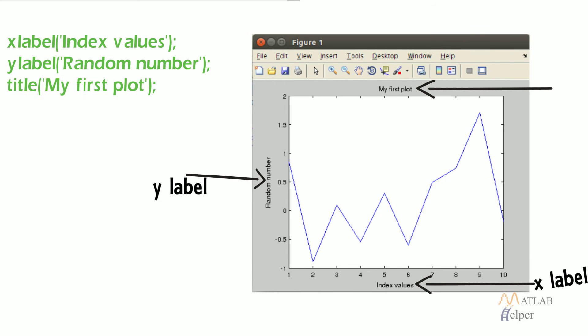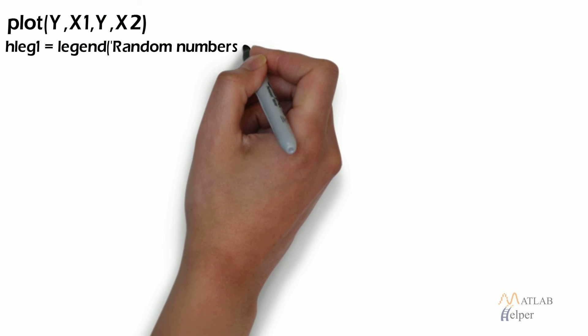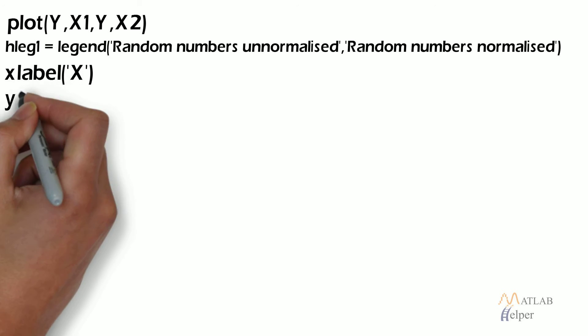We can also plot more than one y vector in the same plot corresponding to the same x values. To differentiate between different y vectors, we can put up a legend in the plot as follows.